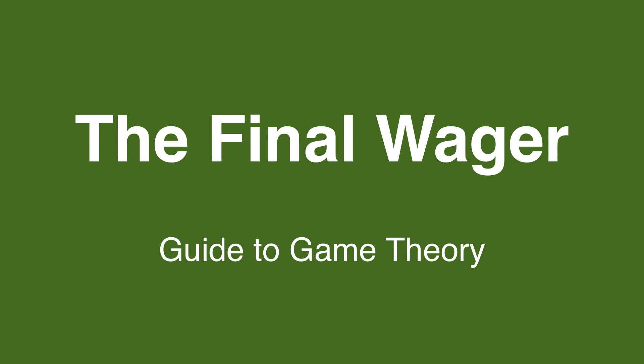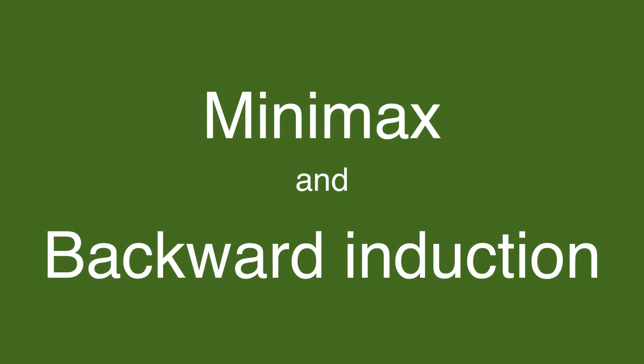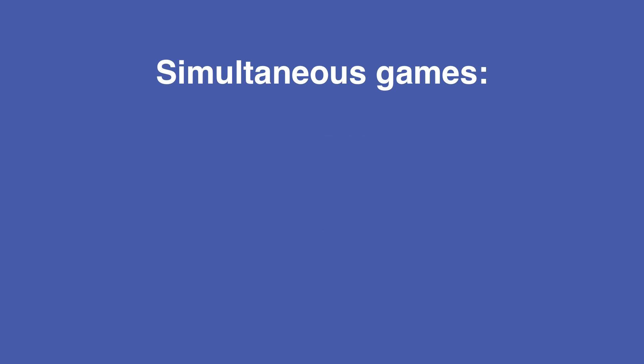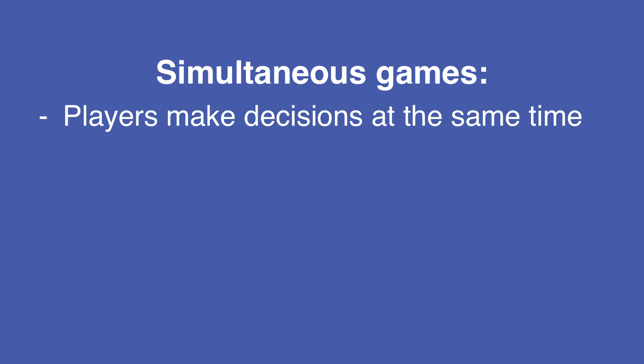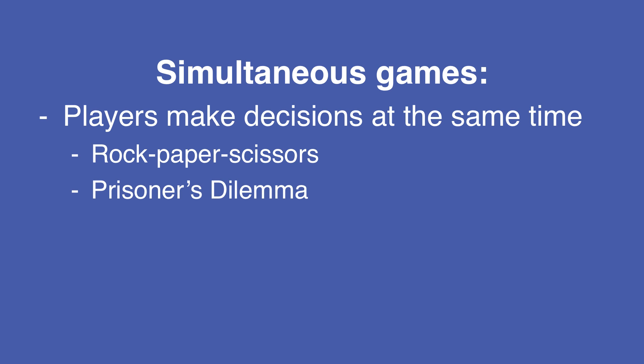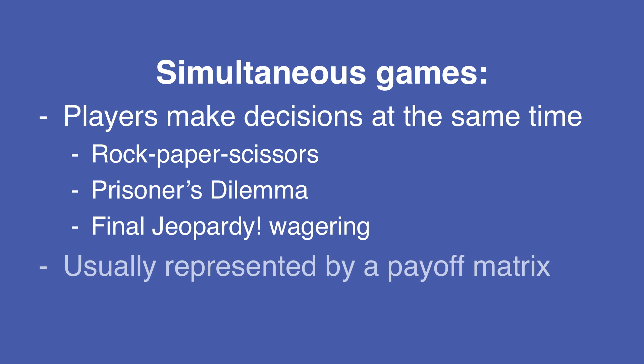Welcome to the Final Wager's Guide to Game Theory. Today we'll discuss the concepts of minimax and backward induction. We've only been looking so far at simultaneous games — games in which players make decisions at the same time. Examples include Rock Paper Scissors, the Prisoner's Dilemma, and Final Jeopardy wagering. We usually represent these games with a payoff matrix.